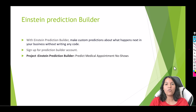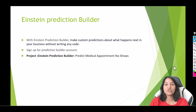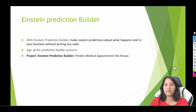So first of all, what is Einstein Prediction Builder? It is basically used to predict something. If you want to predict your future sales, if you want to predict next quarter sales, or if you want to predict if a customer is going to be a show or a no-show, if you want to predict if a patient is going to be a show or a no-show. It is going to predict something for you.